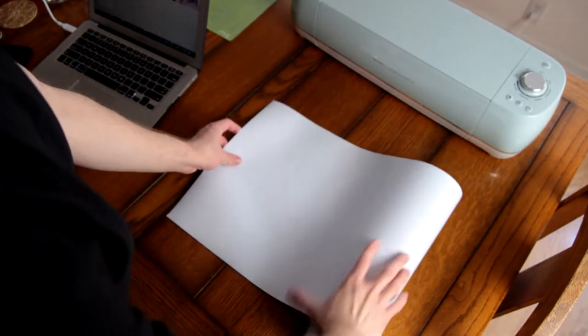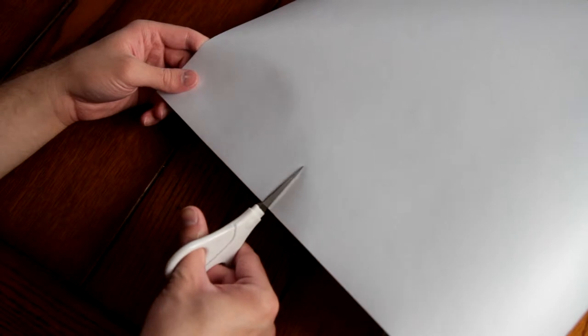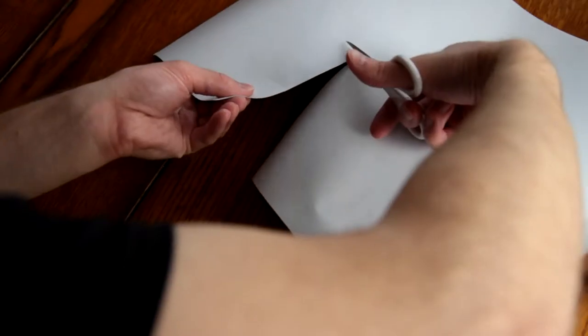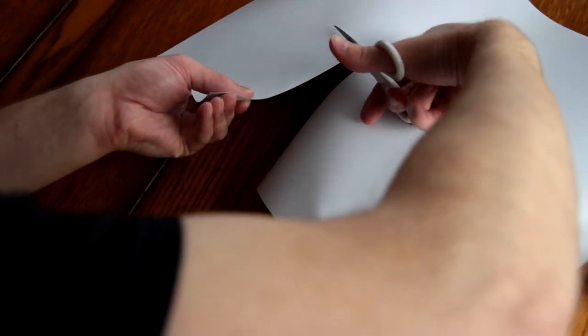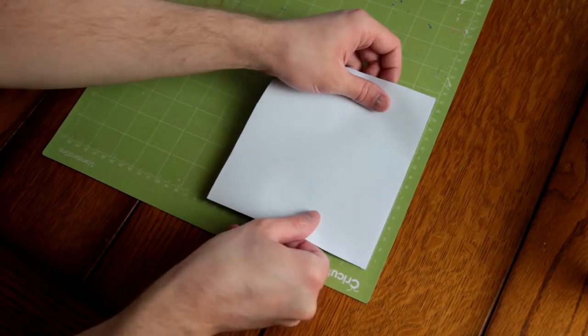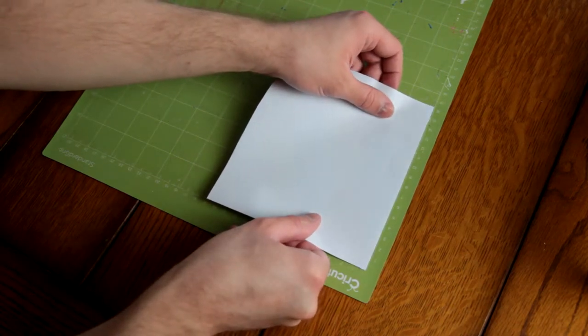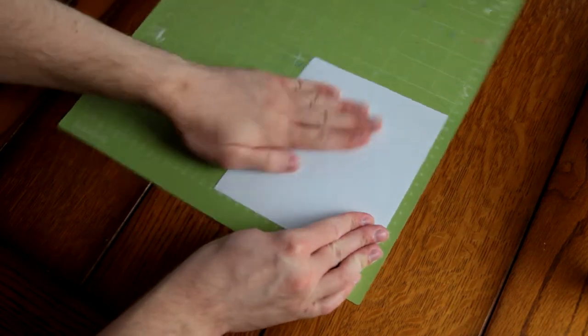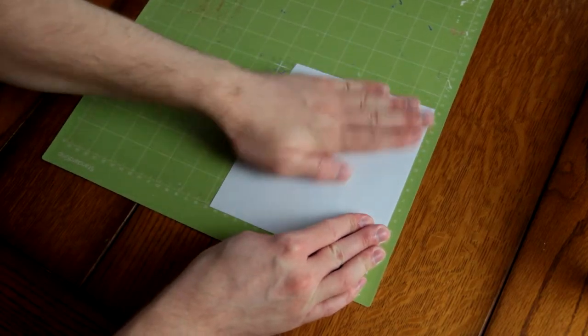Alright, we're going to be using Oracle 651 permanent vinyl since this is for a car window. We're just going to cut it out roughly to size and then apply it to the standard grip mat. You can use Oracle 631 if you're going to be making a decal for a wall or something. 651 might peel off your paint.